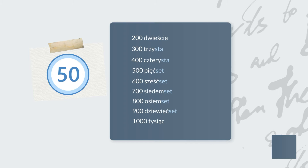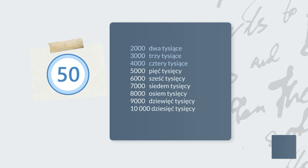Are you curious what goes after that? Let's find out. Two thousand, three thousand, four thousand, five thousand, six thousand, seven thousand, eight thousand, nine thousand. You have to be careful with the twos, threes, and fours because they will tend to take a different form than the rest.